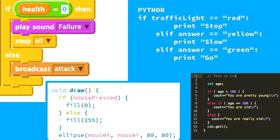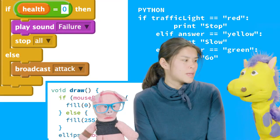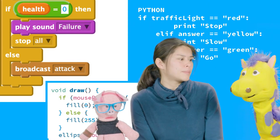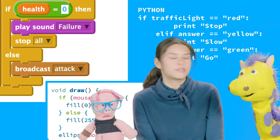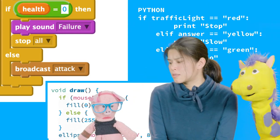Anyway, here are some examples of different if statements in different programming languages. Now we're learning different languages? Sort of. Conditional statements are in all programming languages, so we're just looking at examples. But computers speak different languages just like people or giraffes. Or pigs. Right.